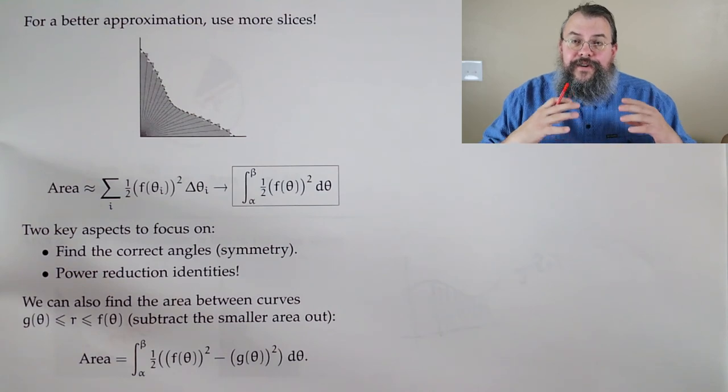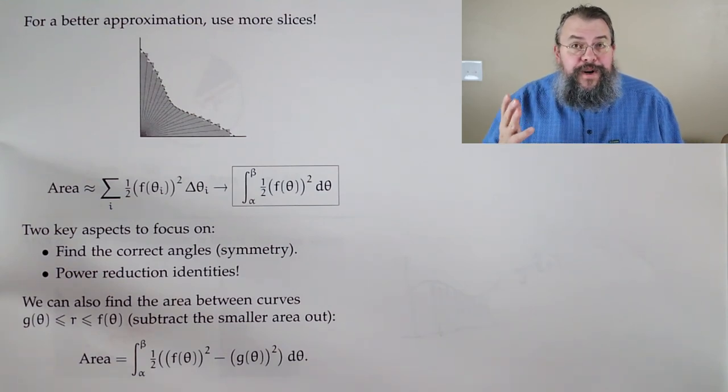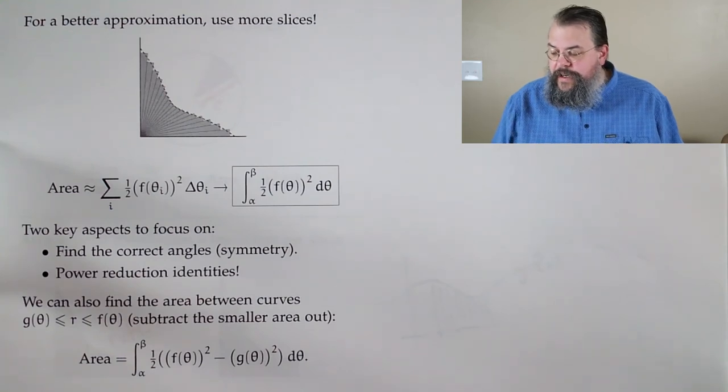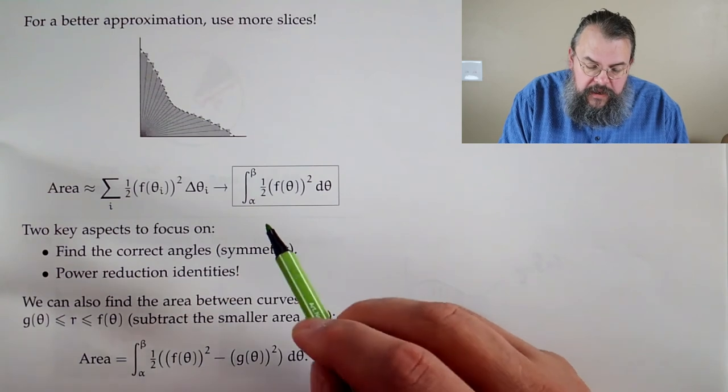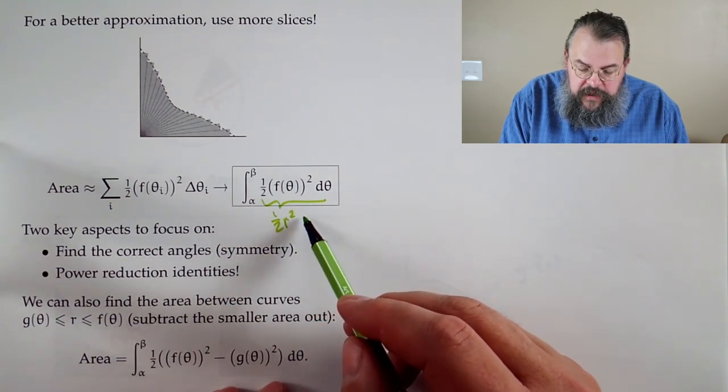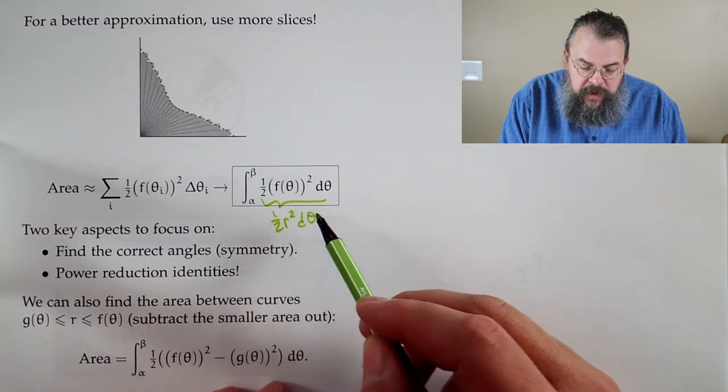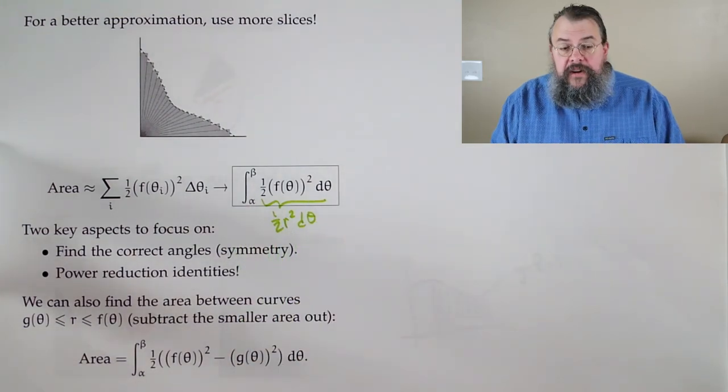So, r squared. And so, if you can remember, you know, what's the area of a pie slice, then you say, hey, that's great. Because that just tells me what I'm adding up. You know, I'm adding these little pieces up here. OK. So, it's lots of little areas being added together.